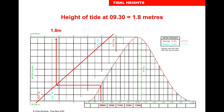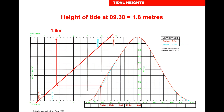A common error is not drawing lines parallel to the guide lines on the chart — if these aren't done correctly the answer will be wrong. For the RYA exam, accuracy to within 0.1 of a metre is required, so it's important to develop good habits. If it's a drying height, take the drying height value from the 1.8m to get the depth of water over that area.